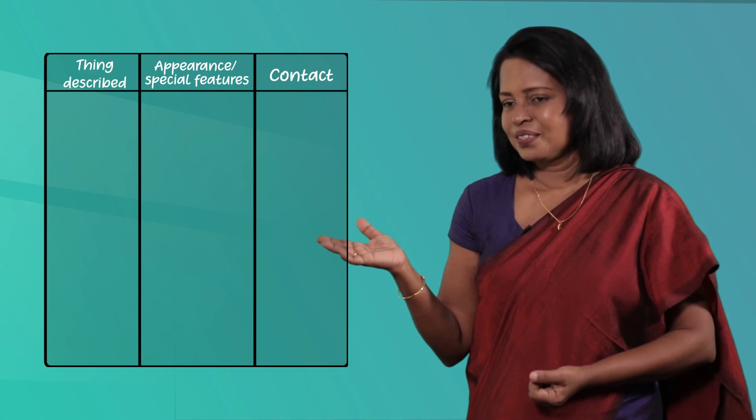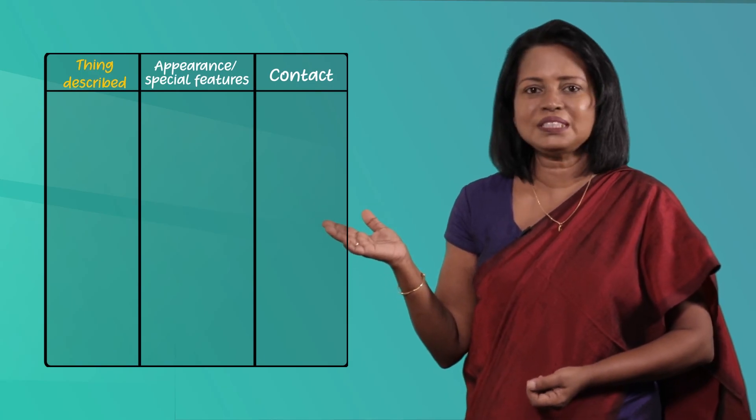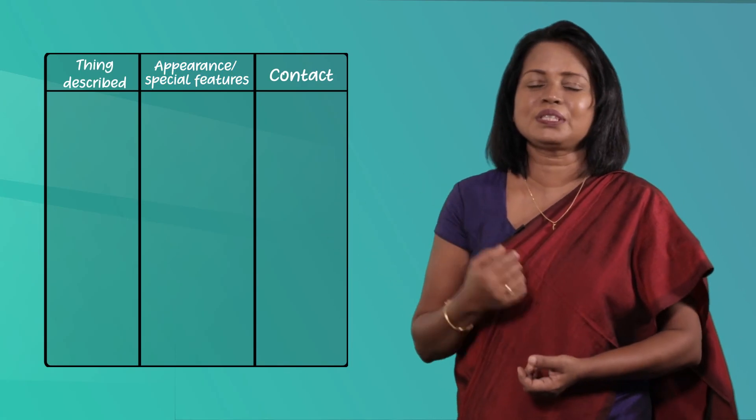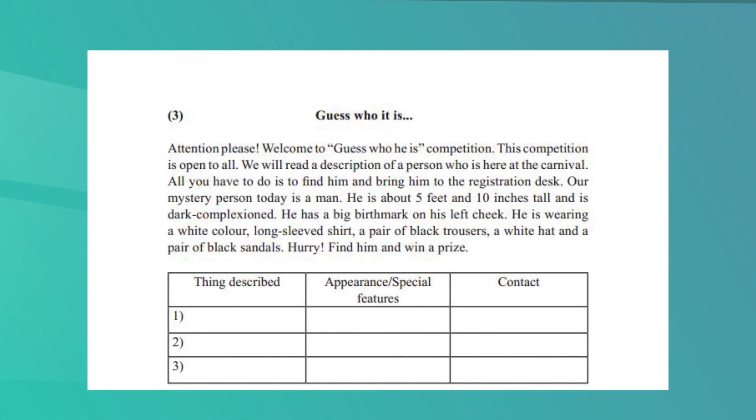Okay children, now you have read two notices. You read two notices and found specific information and transferred it into a grid. Now we are going to do something different — you are going to read an announcement. This announcement is about a person who has gone missing. It's a competition called the hidden stranger competition. Here is the announcement.